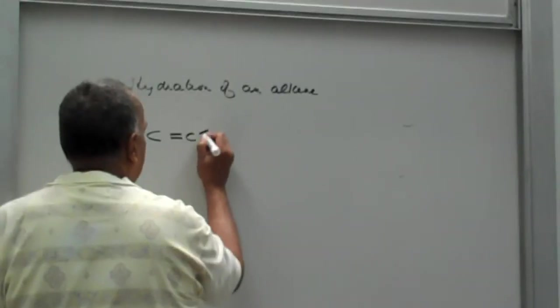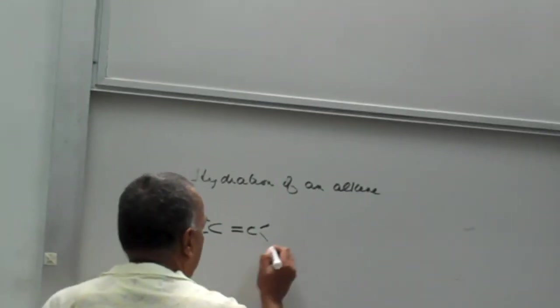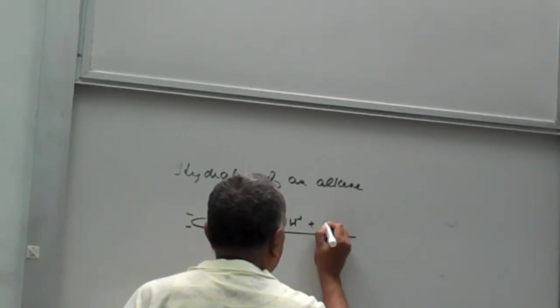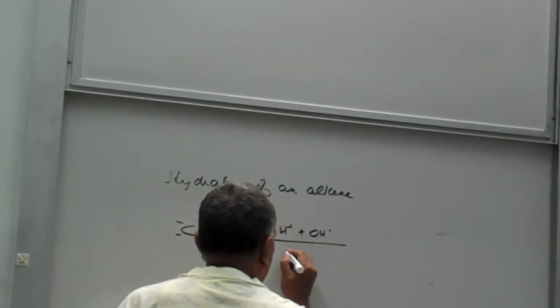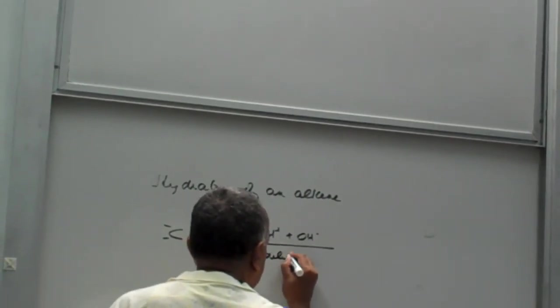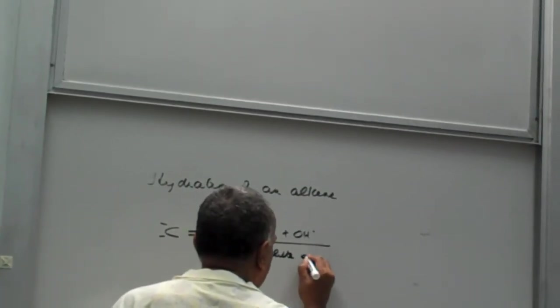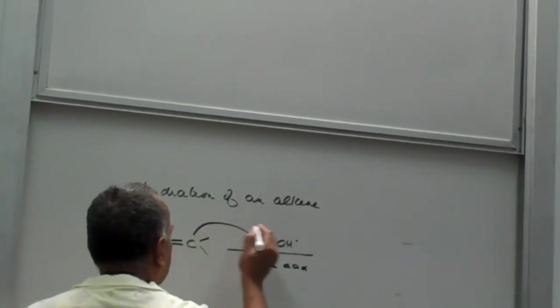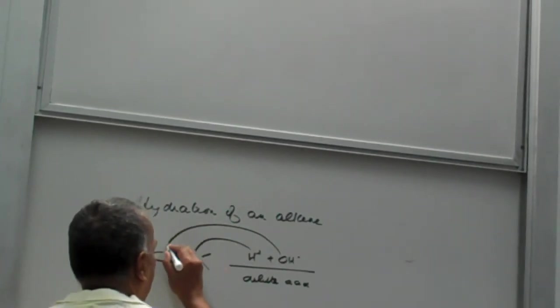I have this reaction on the board from last time. If you take ethene and you add water across it in the presence of a dilute acid, the hydrogen adds first, followed by the OH.